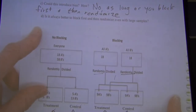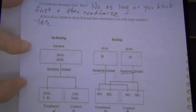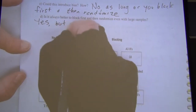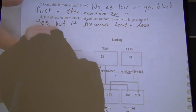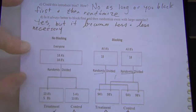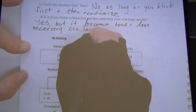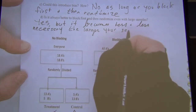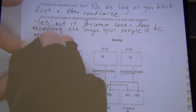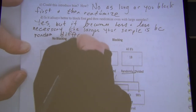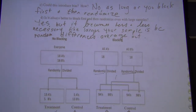Is it always better to block first and then randomize? Yes, but it becomes less and less necessary the bigger your samples. With really big studies, people sometimes don't block.